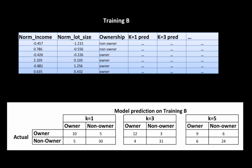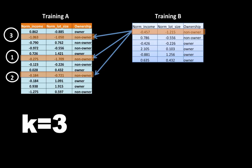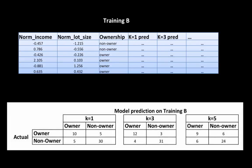We selected k equals 3 from the training partition, but we don't yet know how it performs on independent data sitting in the test partition. So we take k equals 3 and apply it to the test partition — for every case, find its three nearest neighbors in Training A and classify it. We get the error matrix for the test partition and check if the performance is still good. If so, we use k equals 3 going forward to classify new cases.